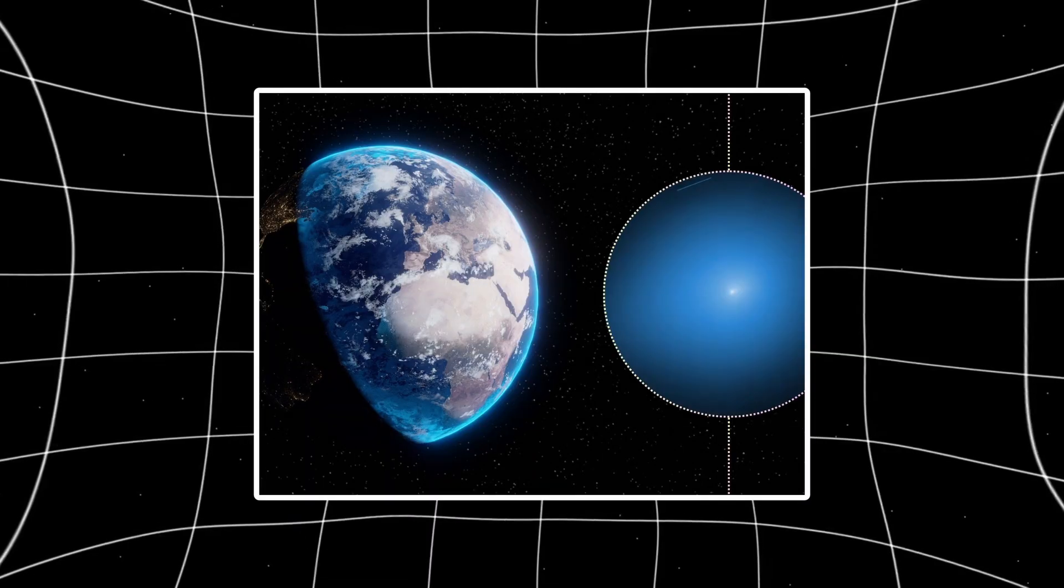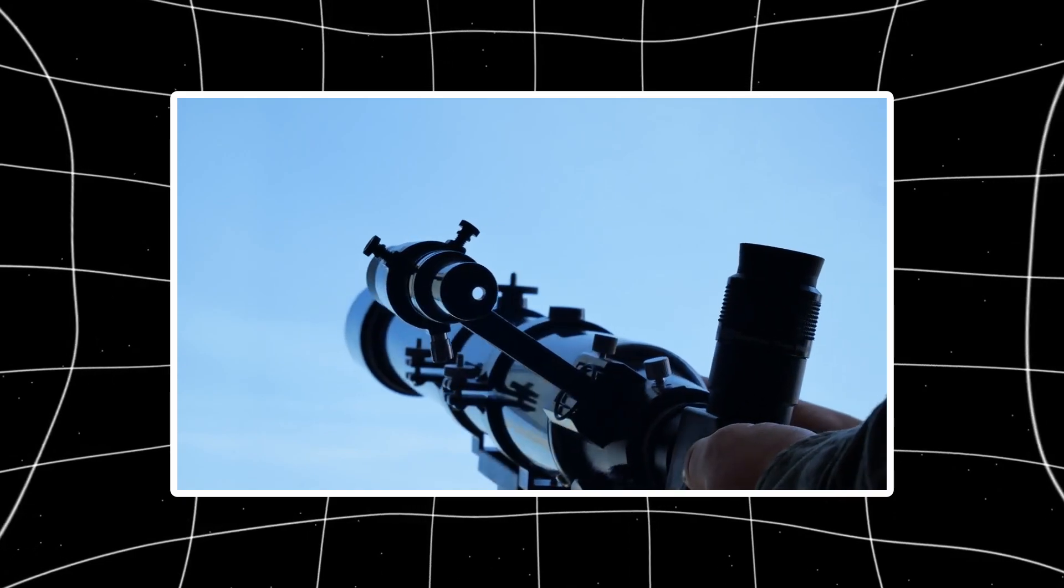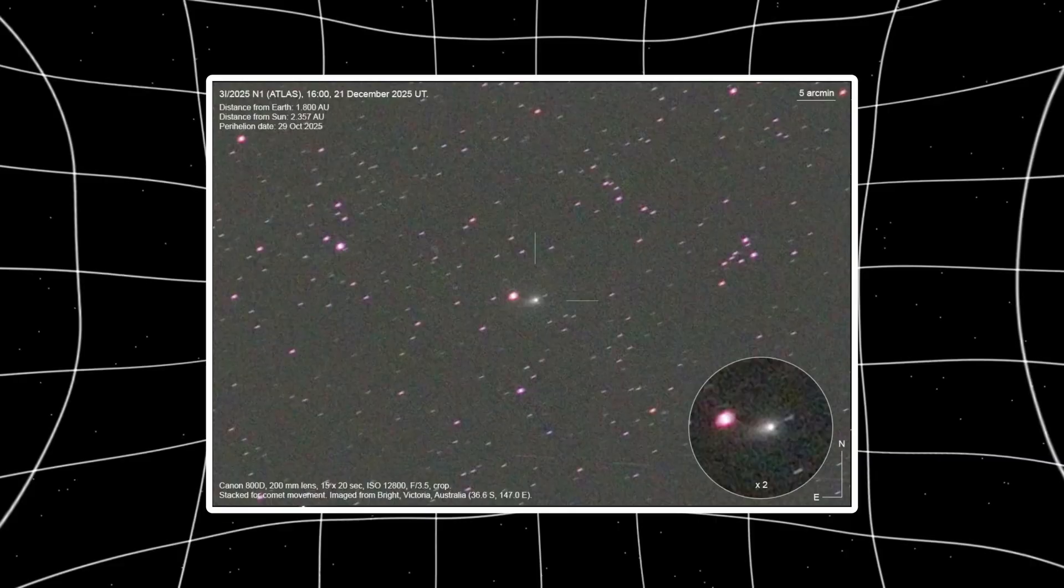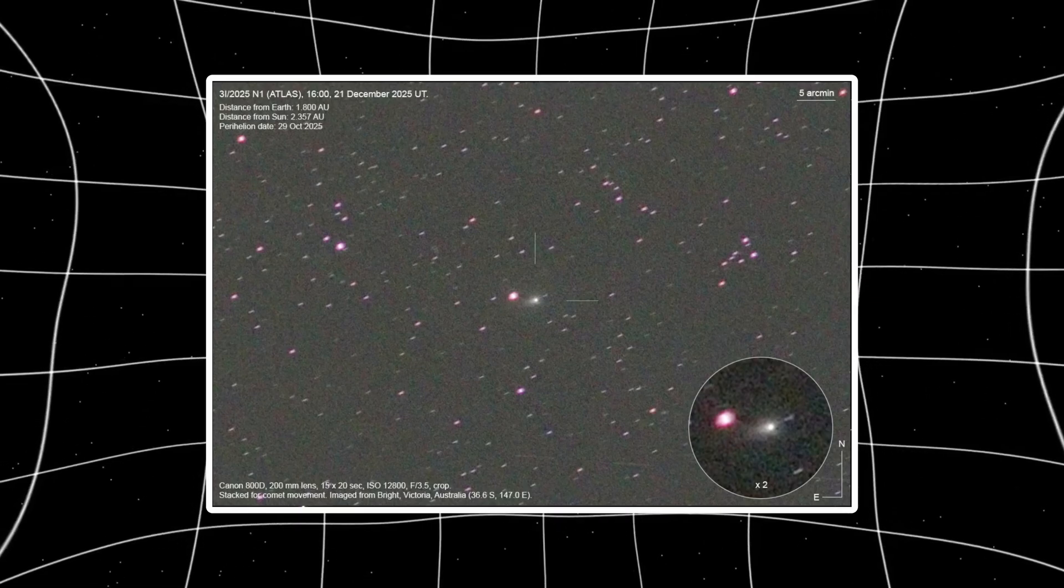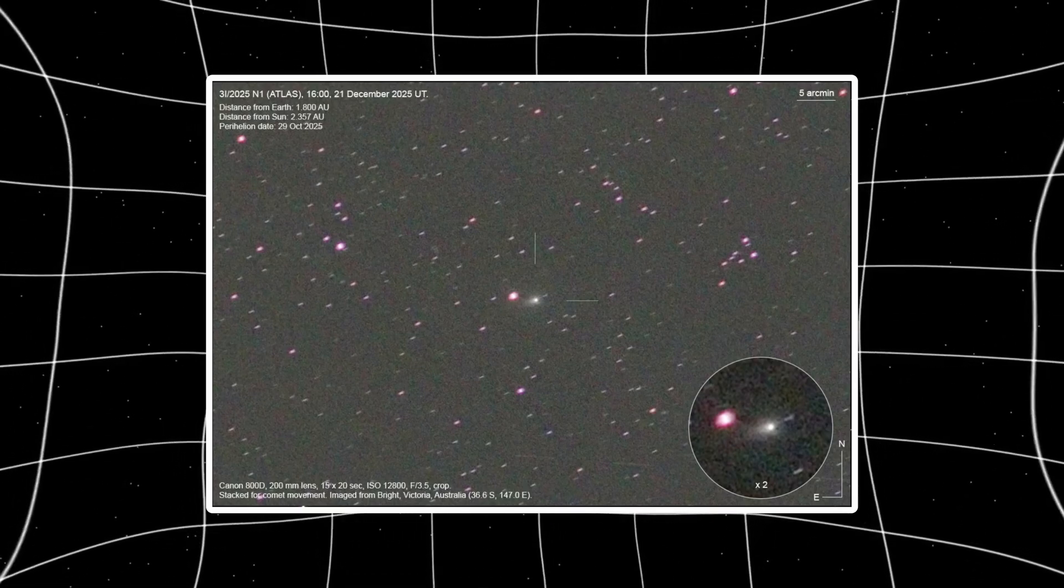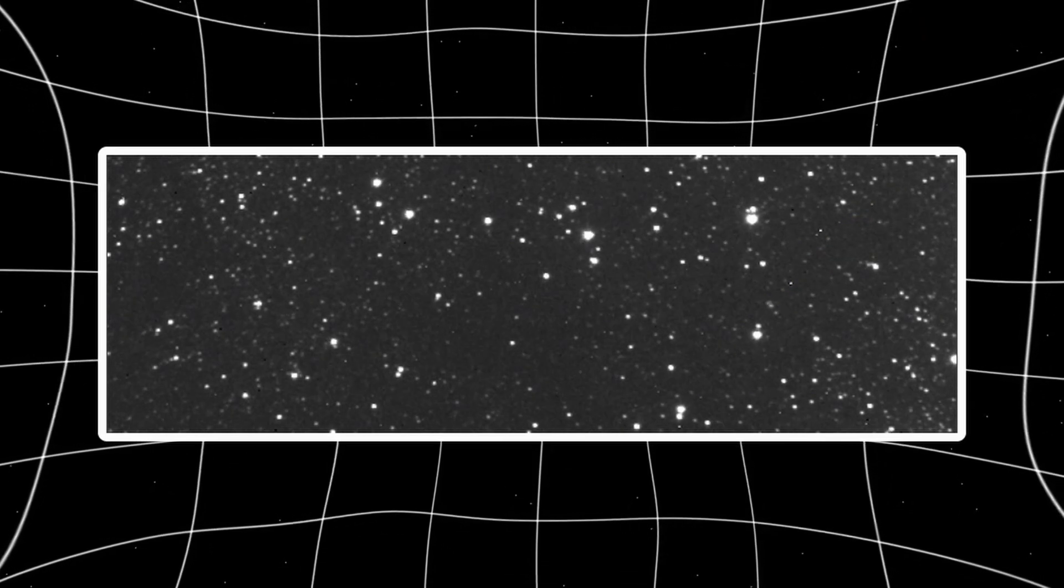December 21st, two astronomical units from Earth. A backyard telescope in Finland tracks something that shouldn't still be visible. The stars streak across the frame. That's normal when you're tracking a moving object. But what stays sharp is what matters. 3i Atlas, still compact, still structured, still there.